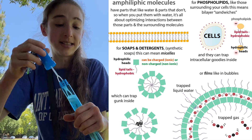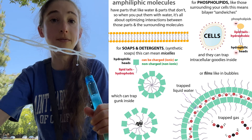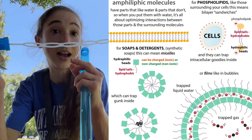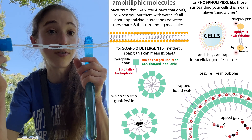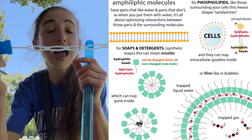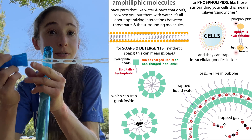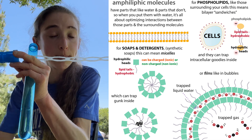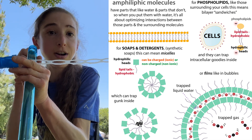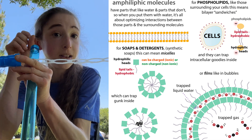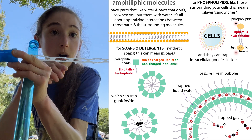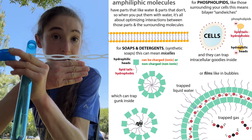What happens is that this makes it so that you form a film, and in this film you have basically two layers of soap with a layer of water in between. The soap molecules have those hydrophobic parts — their tails — sticking out towards the air, and their hydrophilic parts — their heads — hanging out with the water in this thin layer in between.